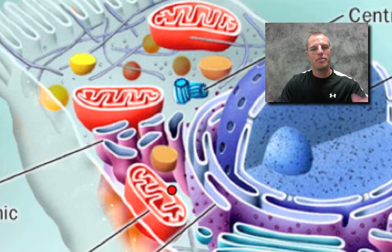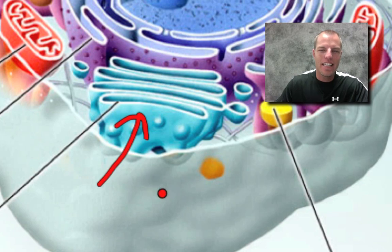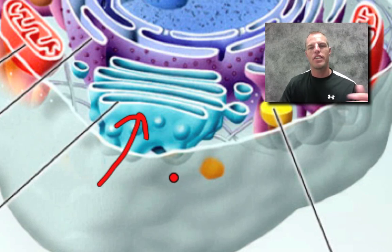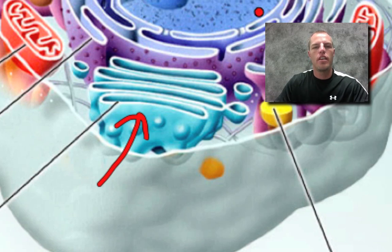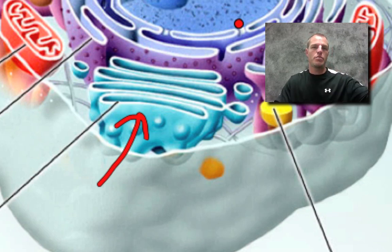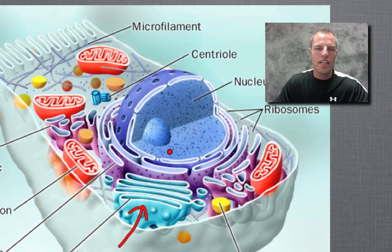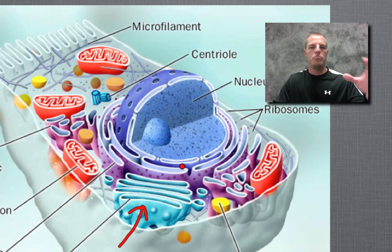The next organelle is the Golgi apparatus, sometimes called the Golgi complex. It kind of looks like a stack of pancakes. The Golgi apparatus repackages and resynthesizes proteins to either export them out of the cell or redistribute them throughout the cell. It's really important in getting those proteins out to where they're needed in the body. So all those organelles — nucleus, ribosomes, rough ER, Golgi — kind of work together in manufacturing and shipping proteins.